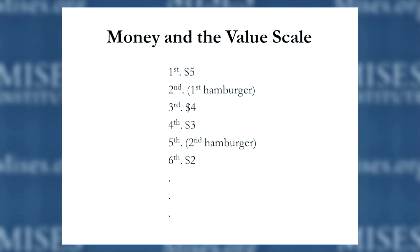In this particular value scale, you would first prefer to have $5 in your pocket, then you'd prefer to have one hamburger, then $4 in your pocket, then $3, then a second hamburger, and so on and so forth.